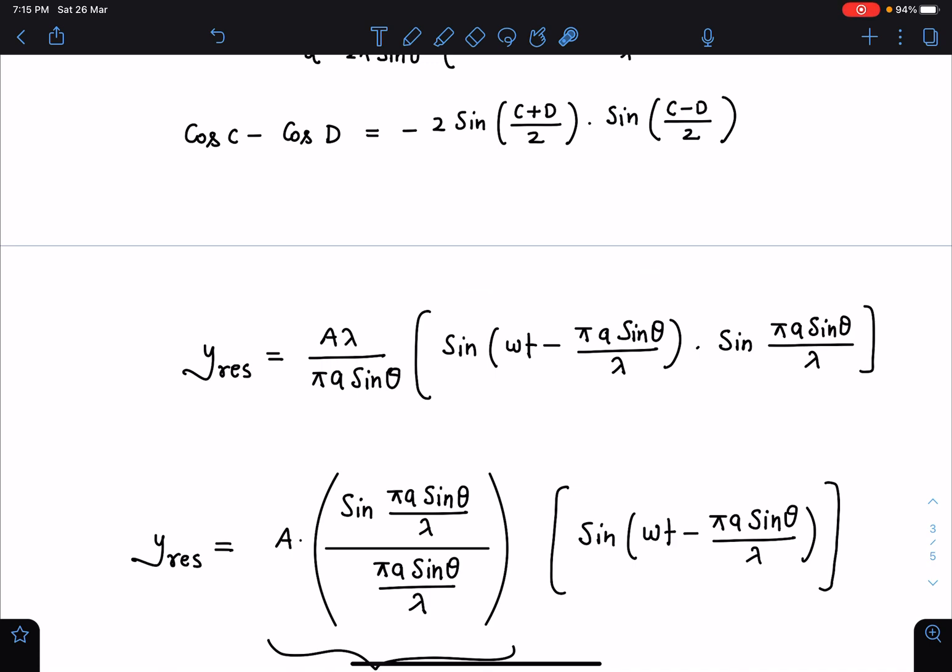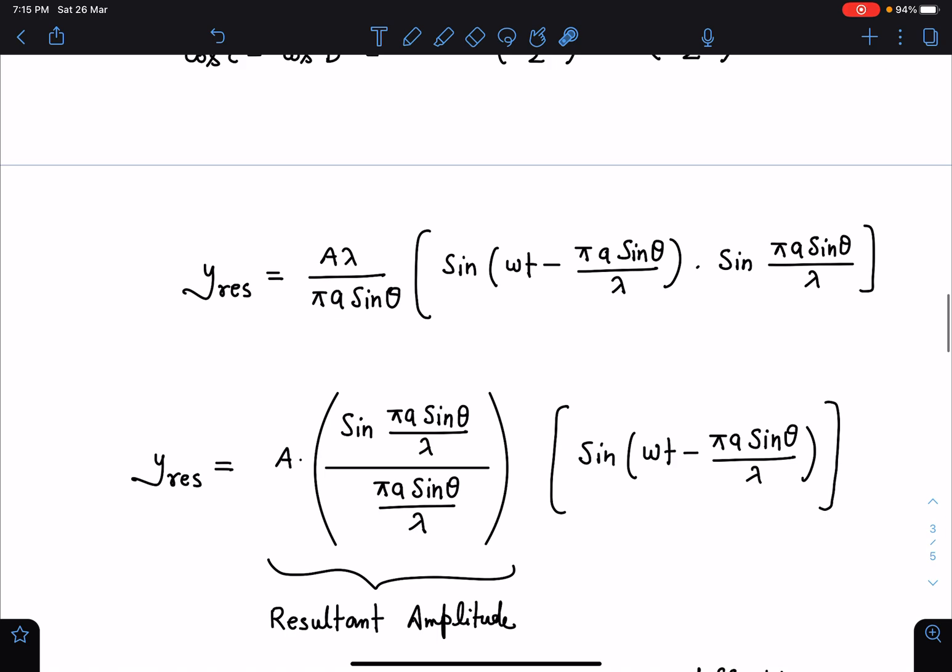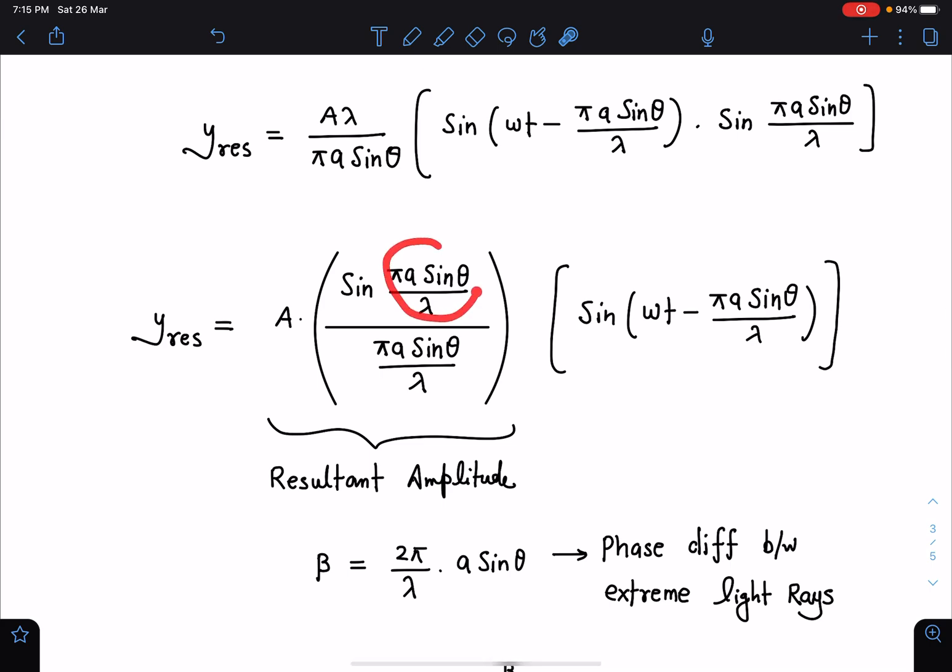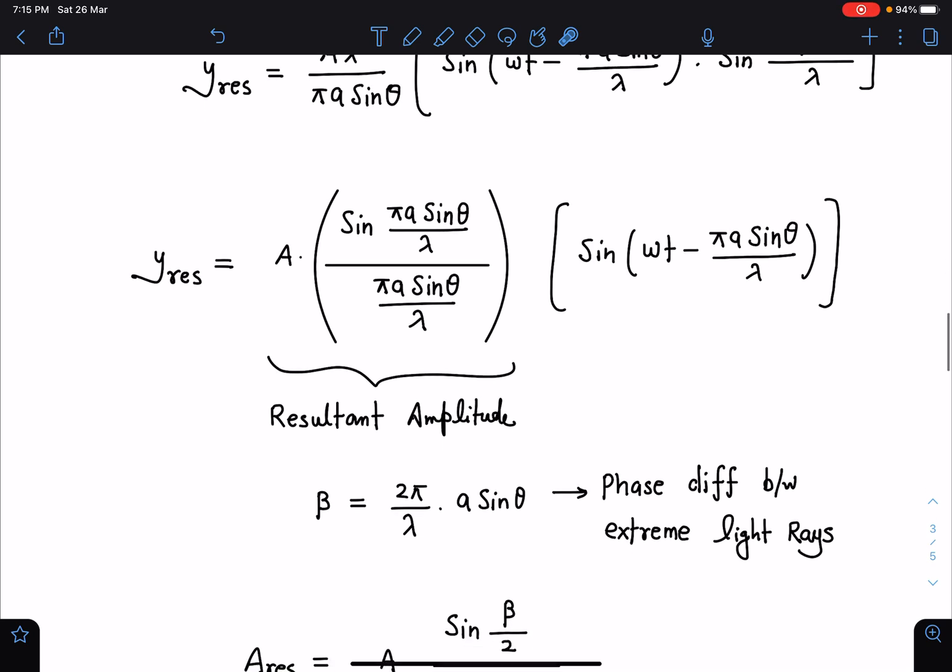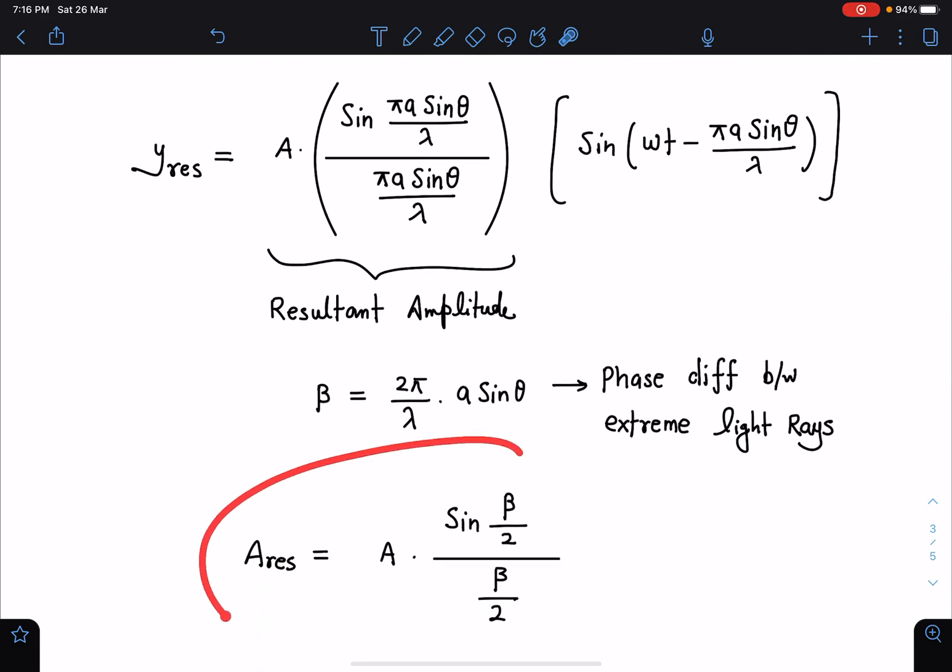Now I am further rearranging all these terms. This term I am keeping separate sin omega t minus pi A sin theta by lambda which is behaving as if it is another wave form whereas this amplitude which comes has dependency on this theta. Now it is a variable amplitude, resultant amplitude I can say. Let us call this term, this is like d sin theta or A sin theta. If beta is 2 pi by lambda times A sin theta, this is nothing but the phase difference between extreme light rays, the top one and the bottom one. A resultant becomes A sin beta by 2 divided by beta by 2.